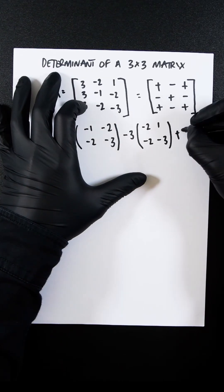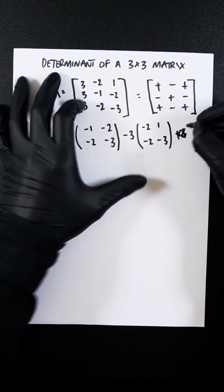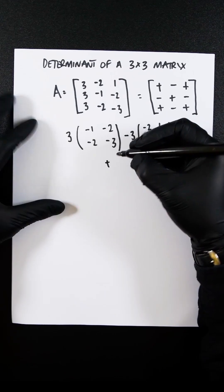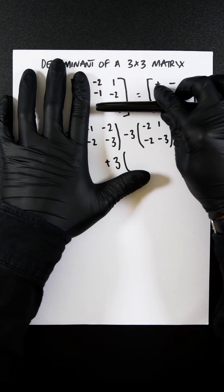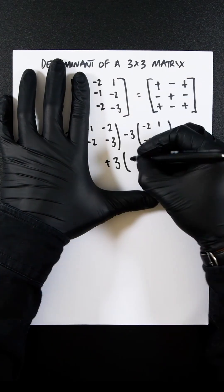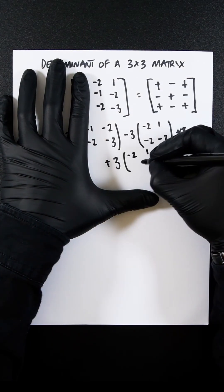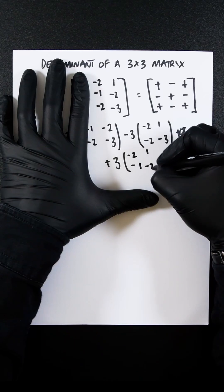And then finally, we have 3. Oh, not enough space there. Should have probably started a bit to the left. Let's rule that out. So you're going to have minus 2, 1, minus 1, minus 2.